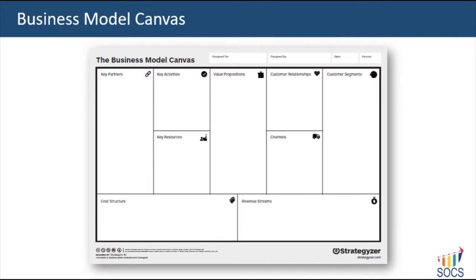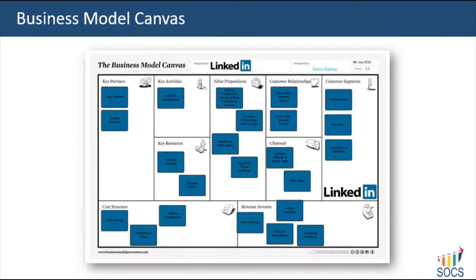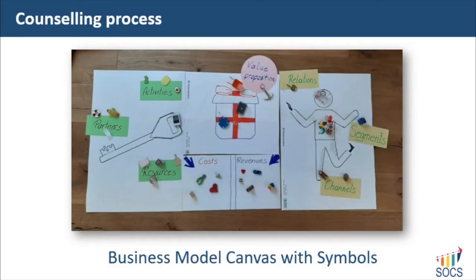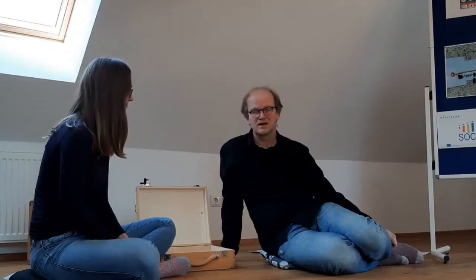A widely used tool is the business model Canvas developed by Alexander Osterwalder. This video shows how to work with the business model Canvas using symbols. If you need more information about the basic tool itself, follow the link provided in the video description. The following video describes the counseling process step by step.